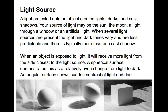Light source: A light projected onto an object creates lights, darks, and cast shadows. Your source of light can be the sun, the moon, a light through a window, or artificial light. When several light sources are present, the light and dark tones vary and are less predictable, and there is typically more than one cast shadow. When doing these drawings initially, we try to keep it to one light source so that it's simpler in terms of seeing the areas of shade.